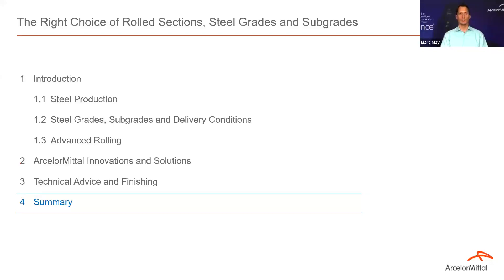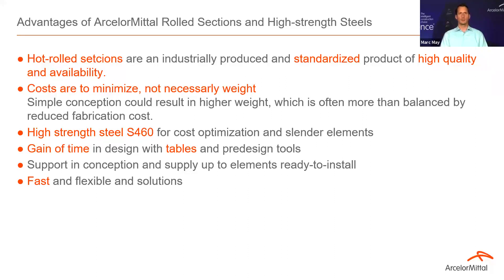In summary: our hot-rolled sections are an industrially produced and certified product with very high quality and good availability. In construction steel, the goal is to minimize costs — not necessarily weight, though these often go together. It is better to use simple conceptions that may have slightly higher weight but with reduced cost. High-strength steel should be used everywhere where cost optimization and slender elements make sense. You can gain a lot of time in design by using our tables or software tools, and we will support you in conception and supply, even of elements ready to install, offering fast and flexible solutions.